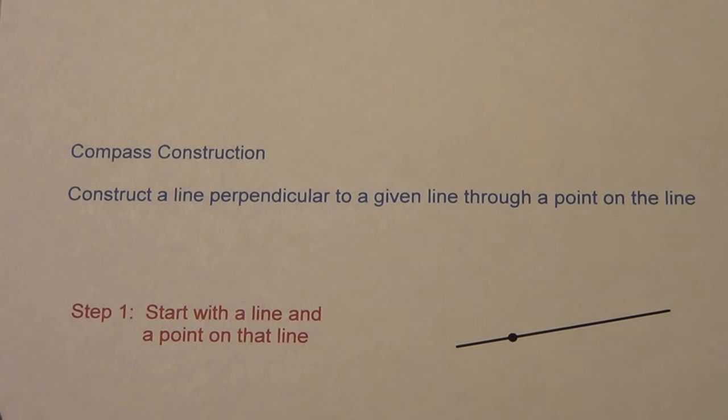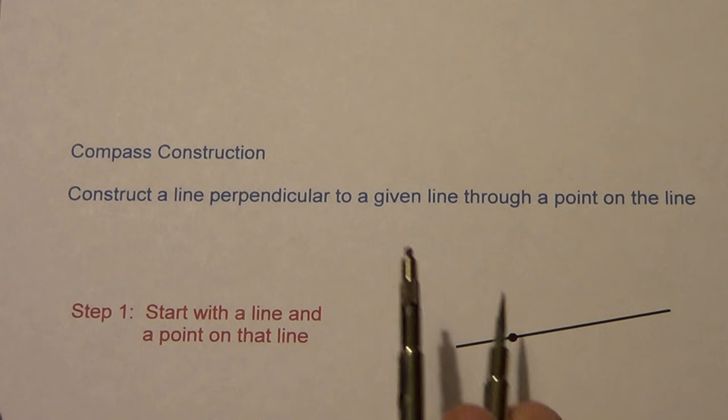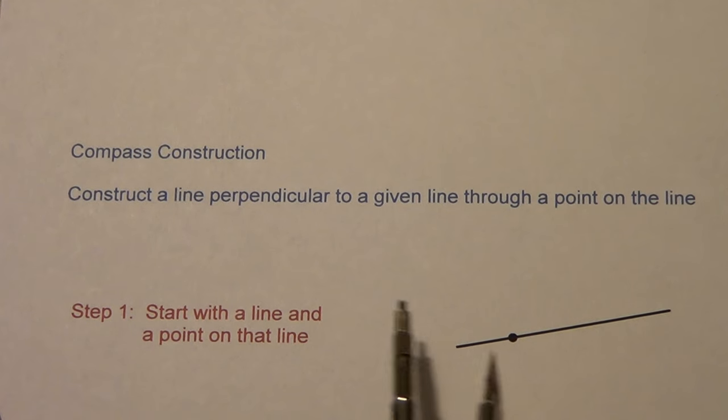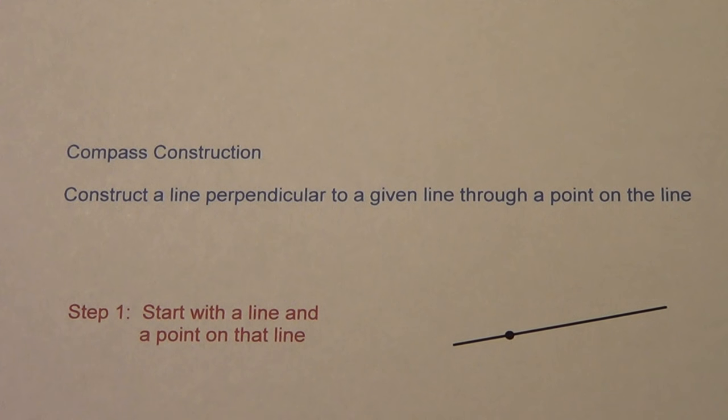Here's what we're going to have. We're going to have a line of some sort, and a point somewhere on that line. It could be in the middle, but it's usually not. Remember, the one we did before, the point was up here, and we did the smile and the chin, and we dropped down. That's different. Here we have a line, and a point is on the line. That's what Step 1 is going to look like.